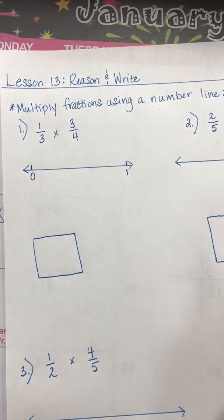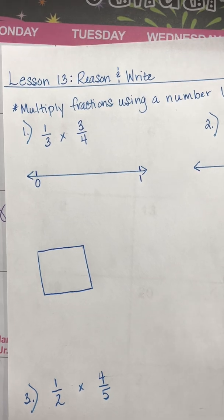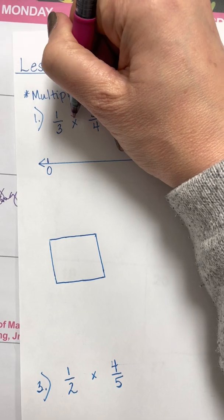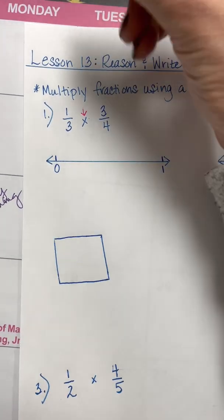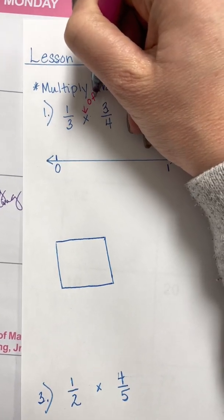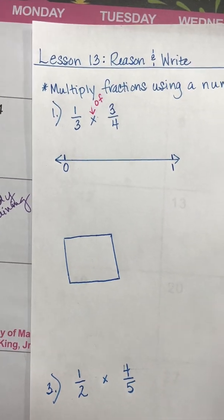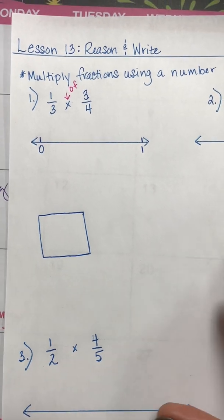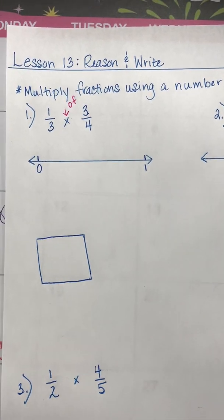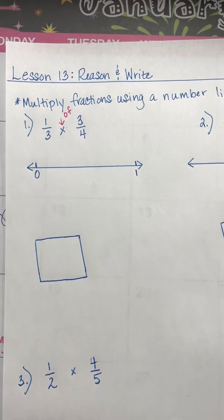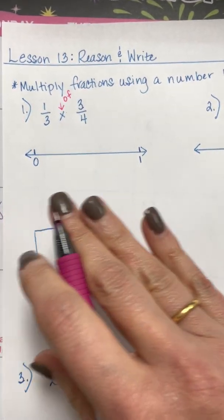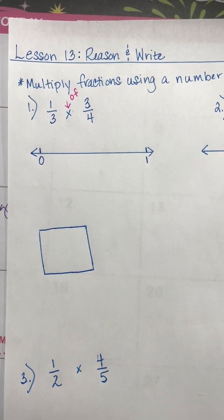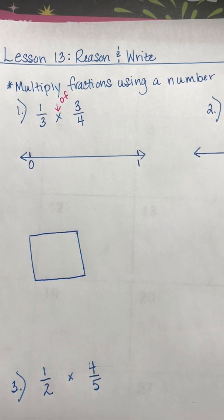The first one we're going to look at is one-third times three-fourths. I think it's important to know that sometimes it's helpful to remember that 'times' also means 'of.' So in this case, one-third of three-fourths seems quite helpful in understanding how to split the number line up. So what we're going to be doing is taking one-third of each of three-fourths.